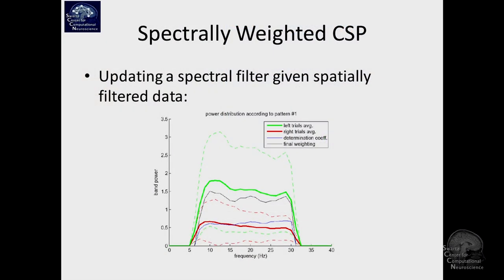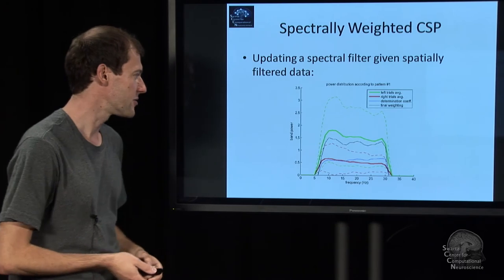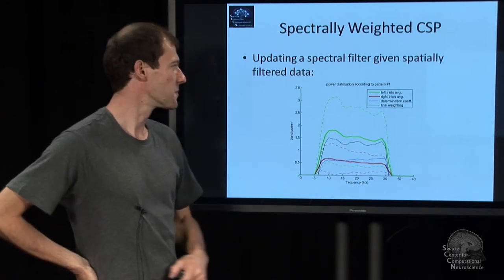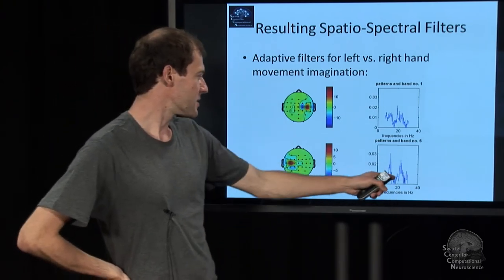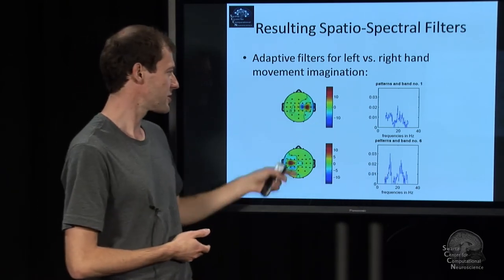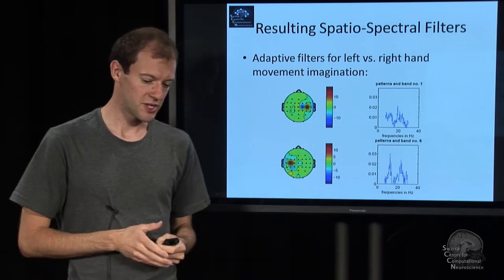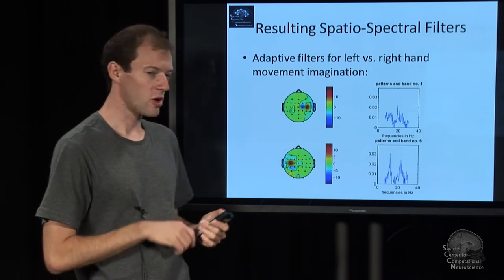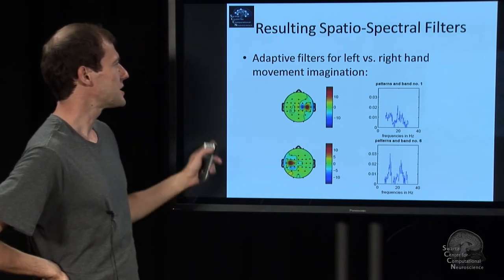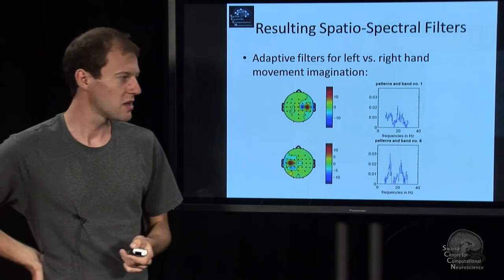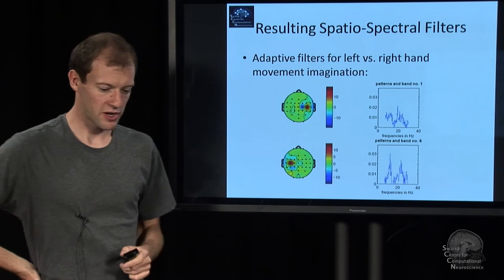One method called spectrally weighted common spatial patterns does CSP on an a priori assumed frequency band, then calculates the correlation coefficient between the label and the two class distributions — the spectrum under one condition versus the other. There are some frequencies that are more informative than others, and it directly turns that into a frequency weighting. After calculating this, you take the frequency filter and do another iteration to optimize the spatial filters again — alternating between optimizing frequency filters and spatial filters. This is a case of block coordinate descent. Spectrally weighted CSP is usually better than standard CSP, but there's no guarantee it finds a global optimum.